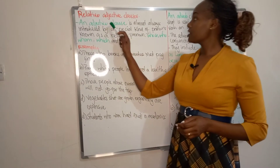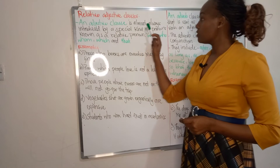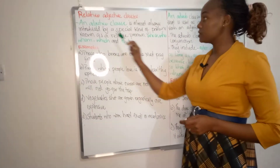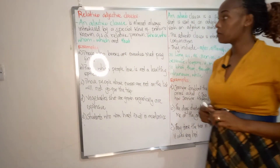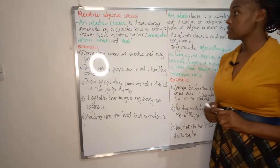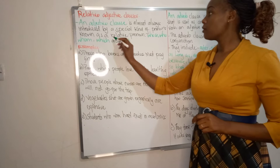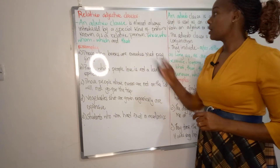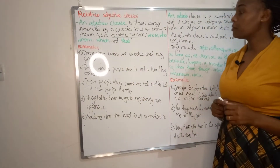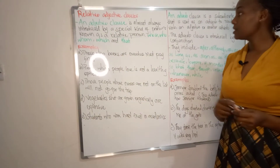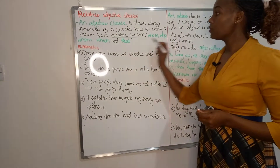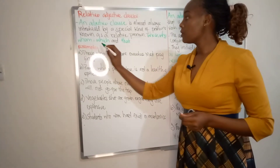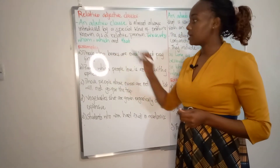An adjective clause is almost always introduced by a special kind of pronoun known as the relative pronoun. The relative pronouns include whose, who, whom, which, and that.